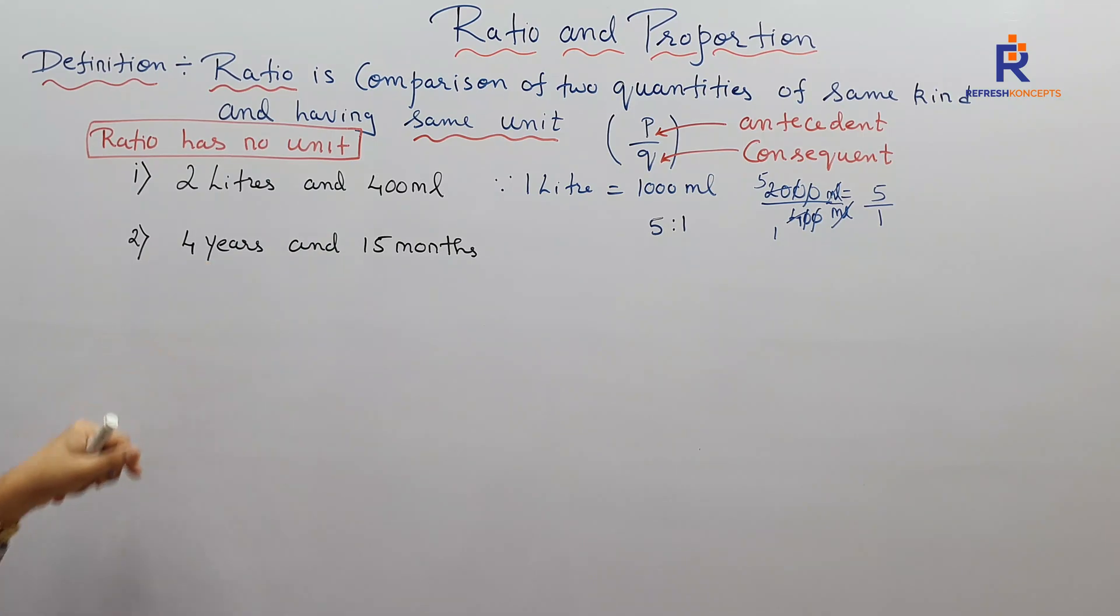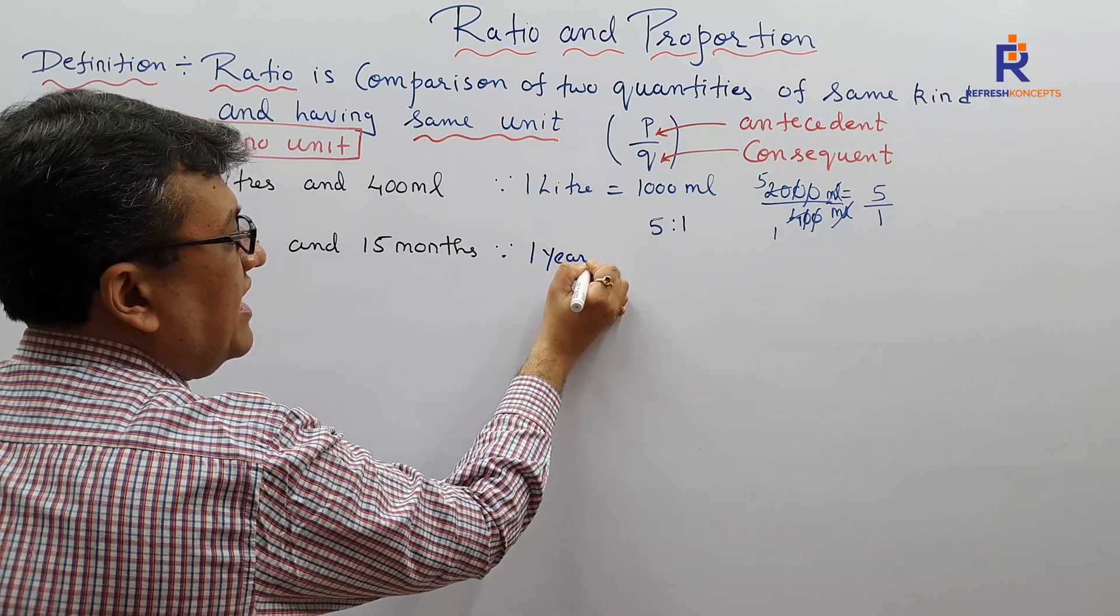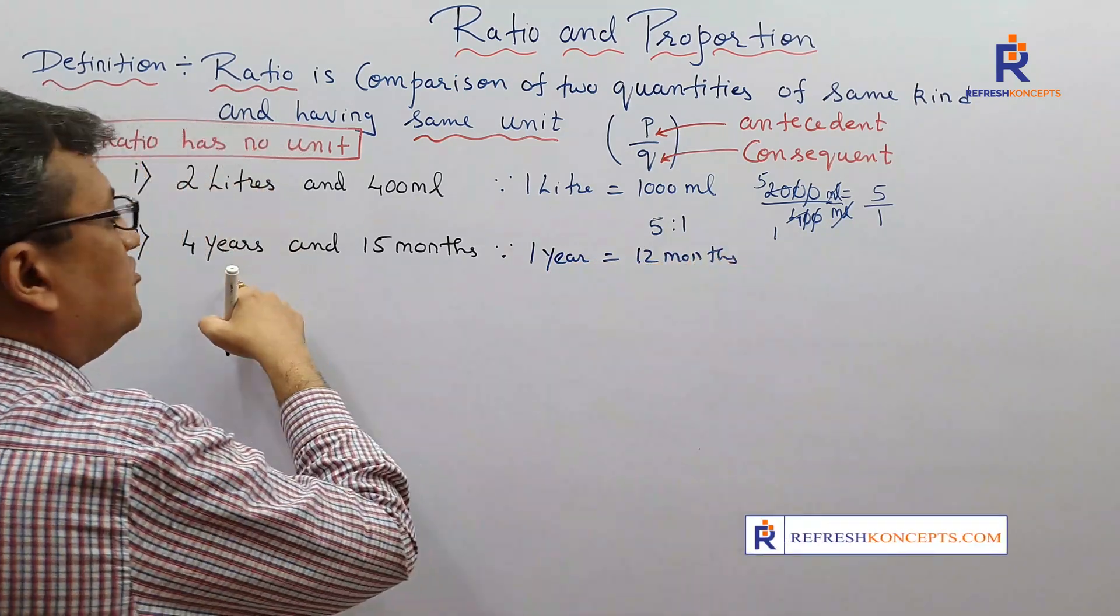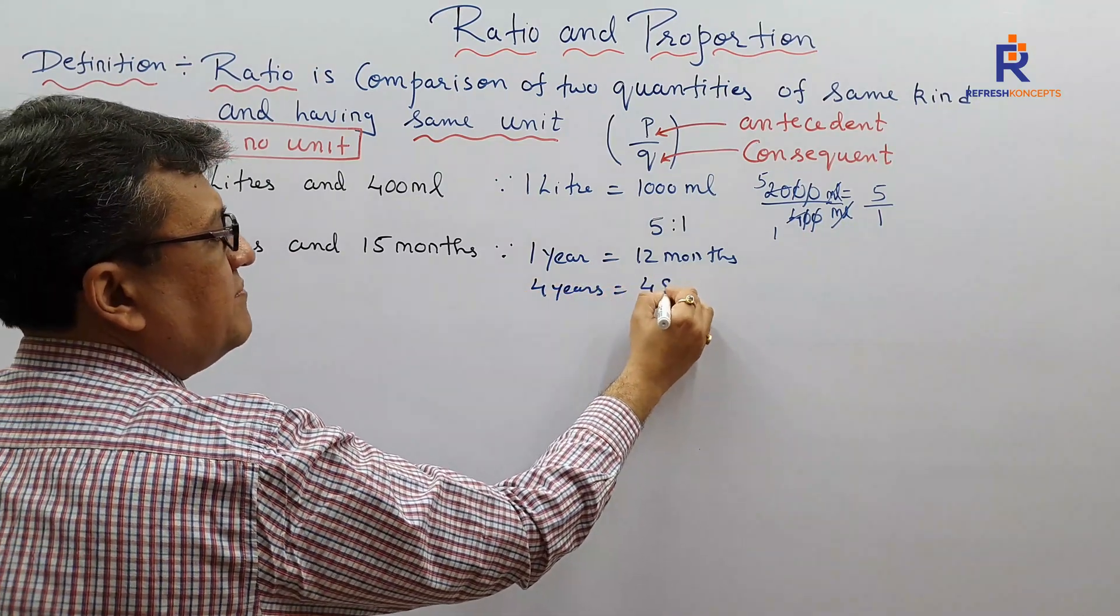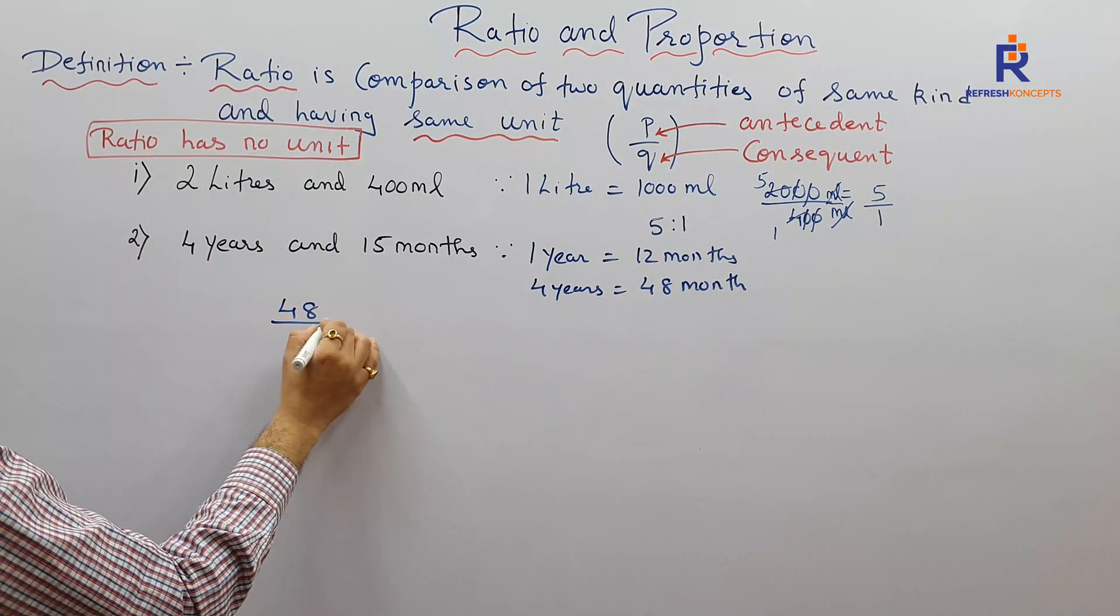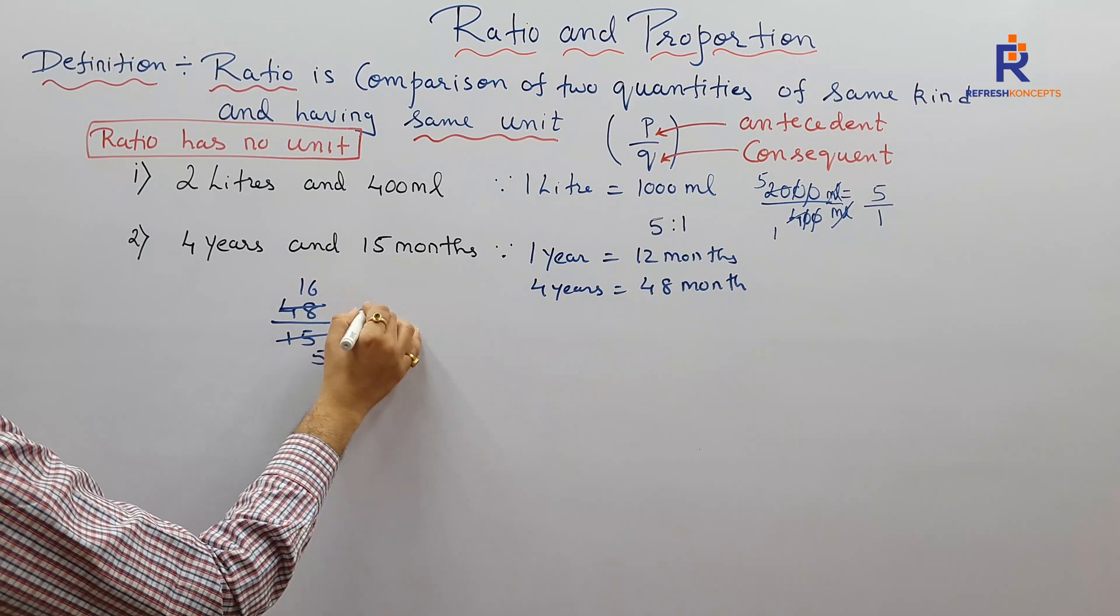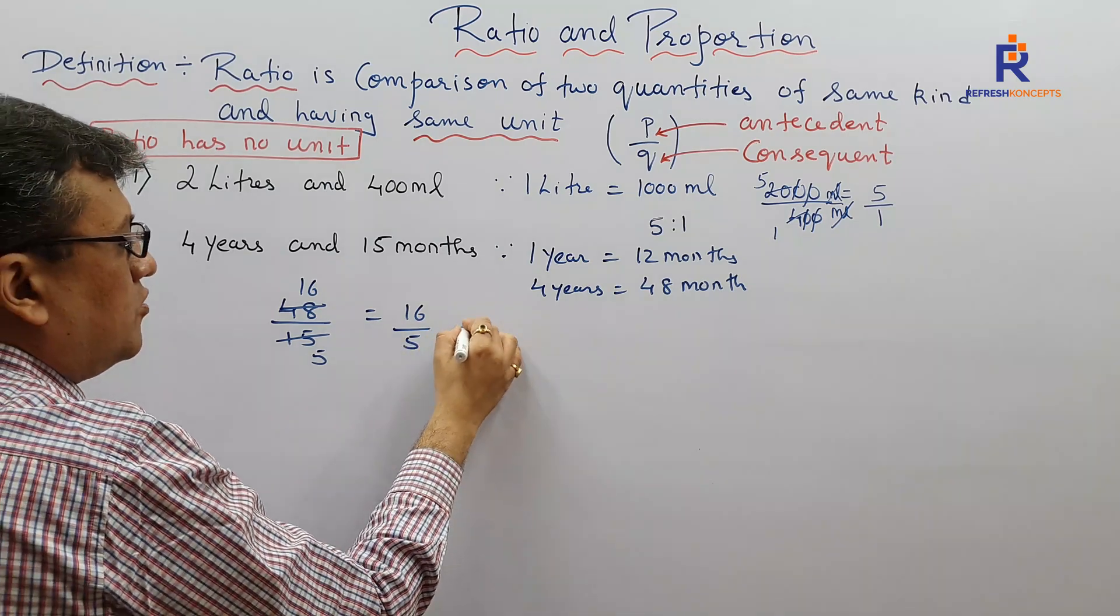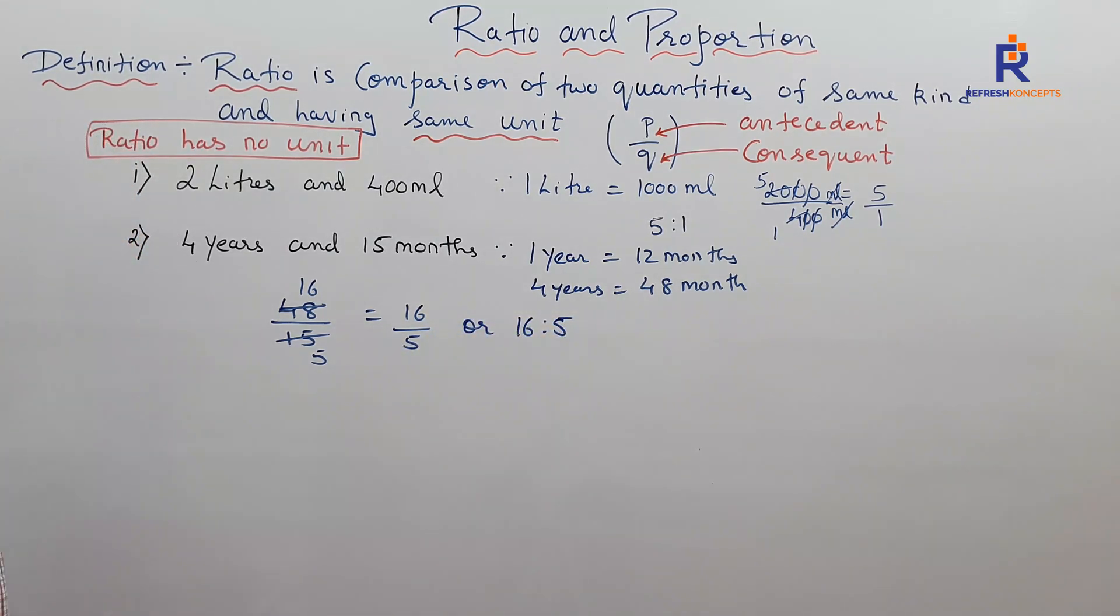So one year has how many months? Since one year has 12 months, what according to you will four years have? Four years equals 48 months. And now the ratio is 48 months upon 15 months, 3 times 5, 3 times 16, answer is 16 by 5. Again, no unit, or one can say 16 is to 5.